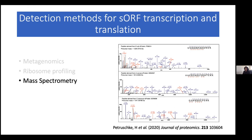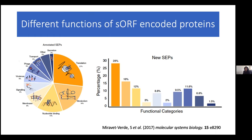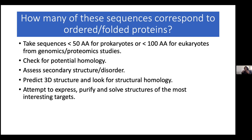What kind of things do they do? A large chunk of those characterized so far seem to play roles in translation and metabolism and frequently nucleotide binding. However, we see them turning up in other things such as quorum sensing, defense, and in prokaryotes particularly defense against phages. Reading about this got me really interested, and the question I wanted to ask was: how many of these sequences — there are thousands getting churned out from all of these studies — correspond to what I would consider ordered or folded proteins?